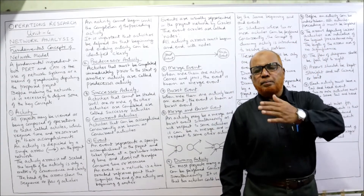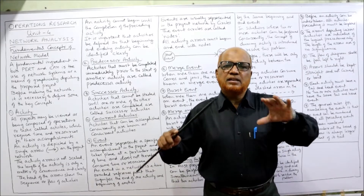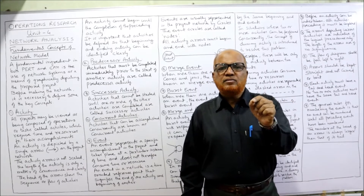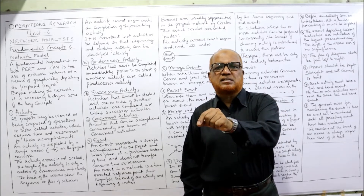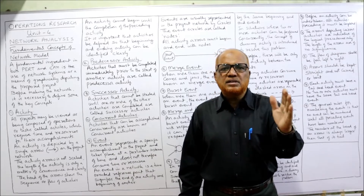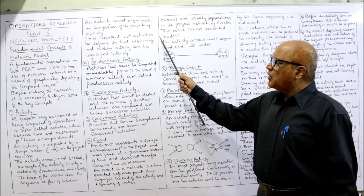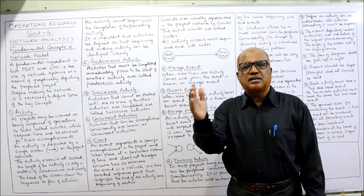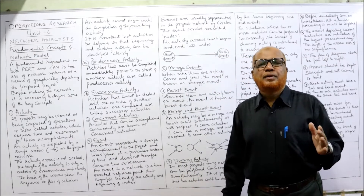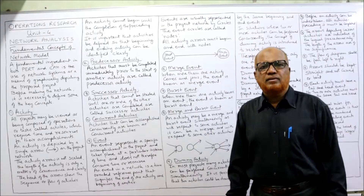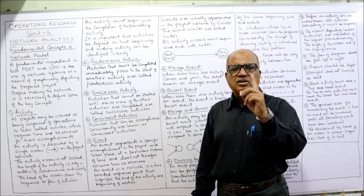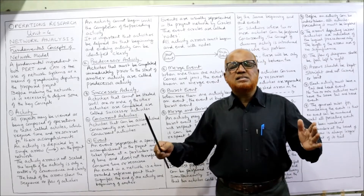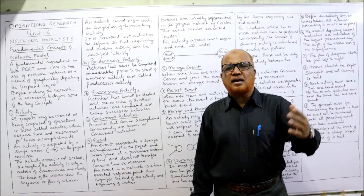An activity cannot begin until and unless all preceding activities are completed. In the network diagram we have to make the relationship between predecessor activity and successor activity — which activities should be done first and which activities should be done next. It is important that activities may be defined so that the beginning and ending activity can be identified, named like A, B, C, D or 1, 2, 3.